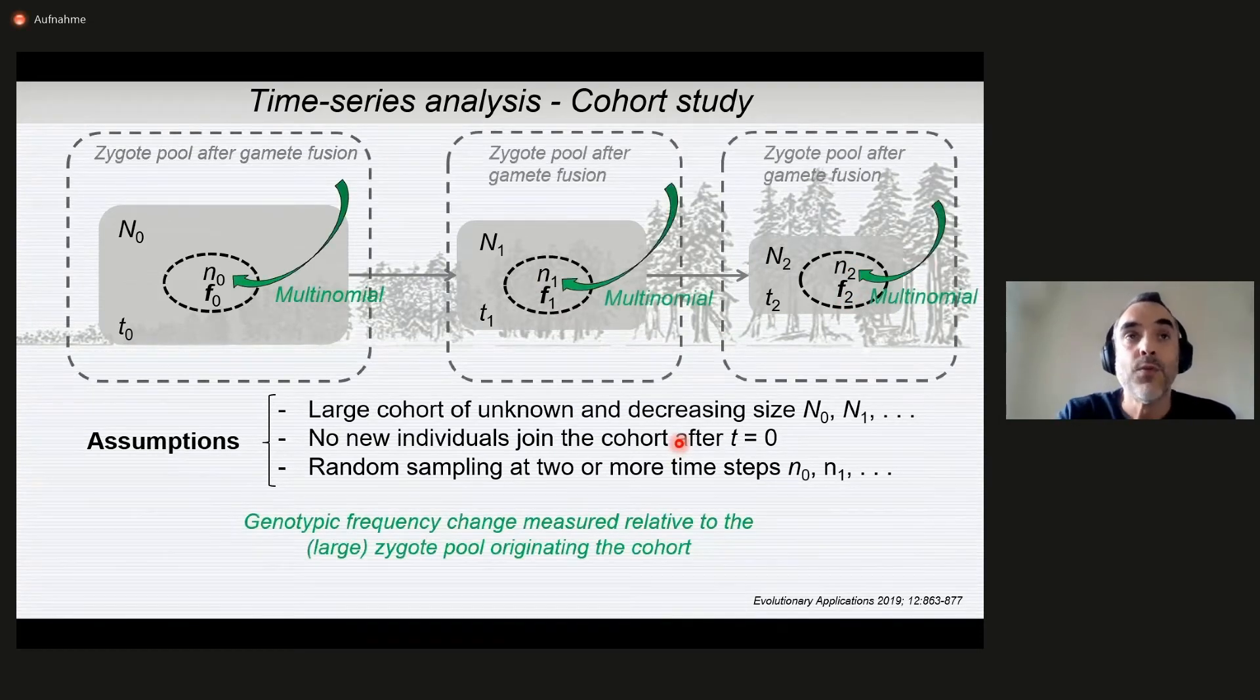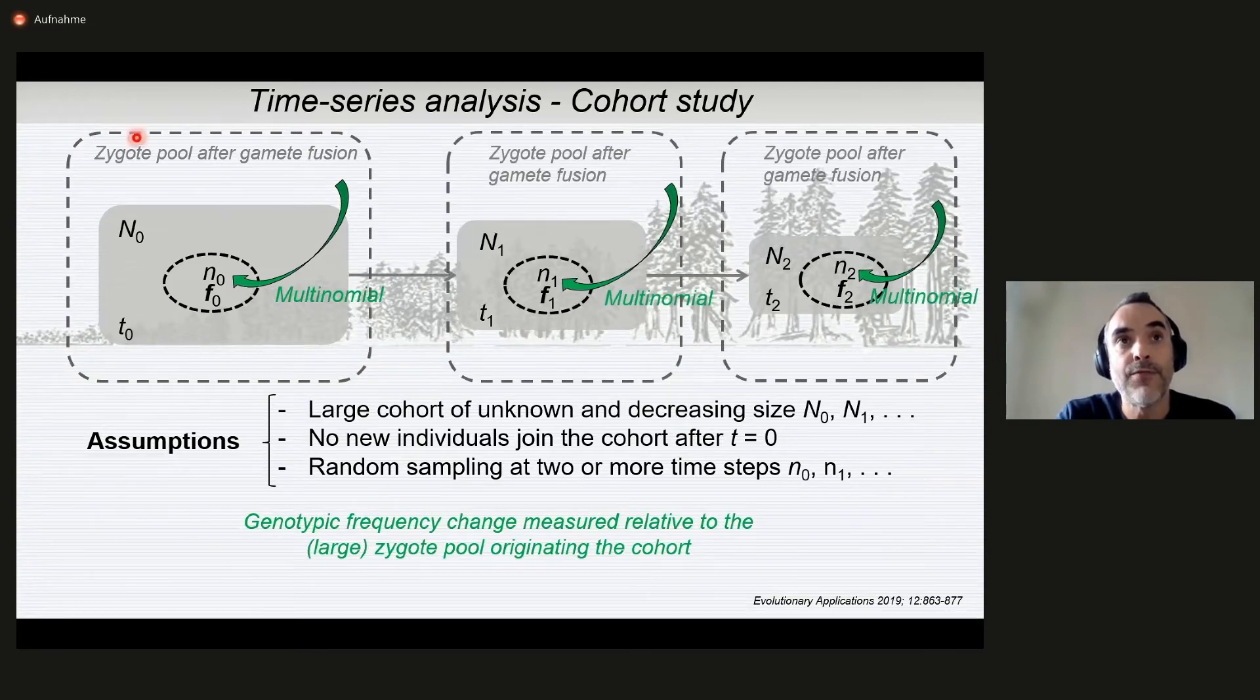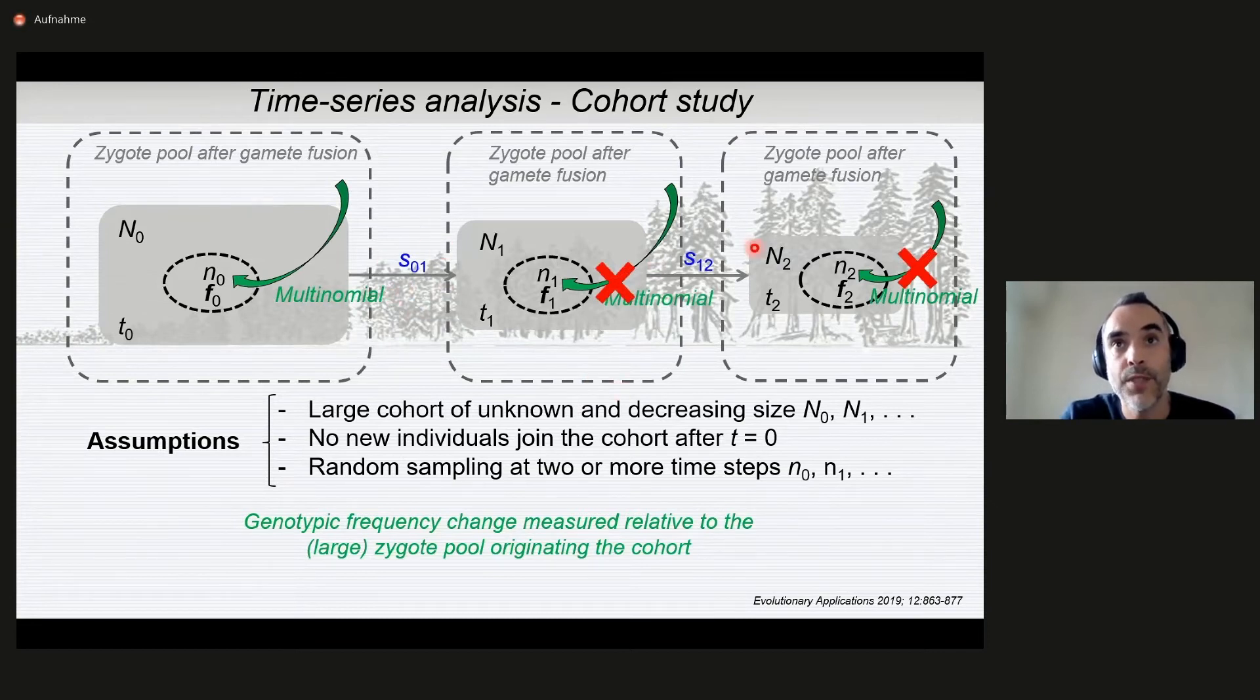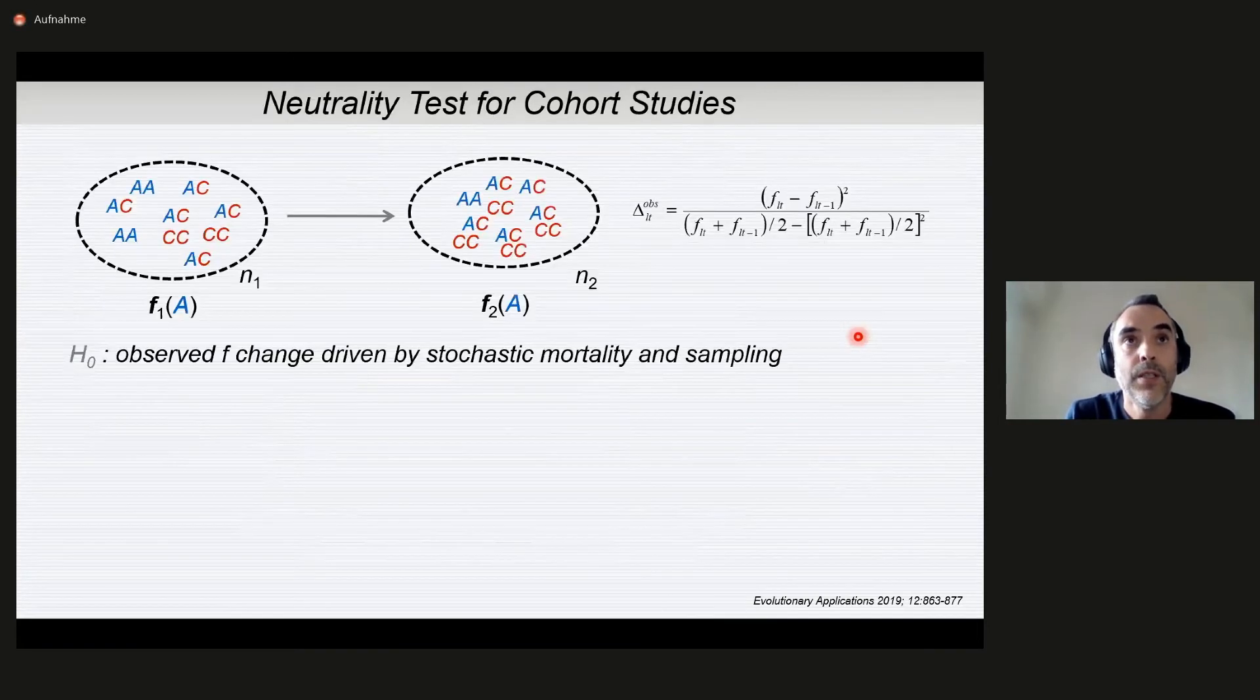We will consider as reference genotypic frequencies those of the zygote pool after gamete fusion. Think of the large seed crop before dispersal in a stand. Under the null hypothesis of neutrality, then each of our temporal samples will be simply a multinomial draw from this large zygote pool. However, if we have selection, and this is the part in which we are interested after the initial moment, if we have selection, then of course this sampling is no longer a multinomial. We will have to consider the selection and how it affects in a deterministic way genotypic frequencies.